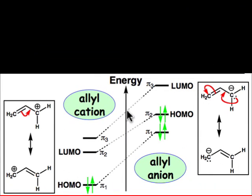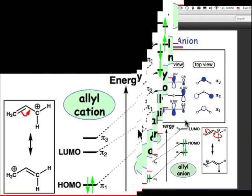The energy diagram shown here results from WebMO calculations. Remember that negative charge increases atomic orbital energies, while positive charge lowers atomic orbital energies. As a result, we see that the energy levels for the allyl cation are much lower than the energy levels of the allyl anion.